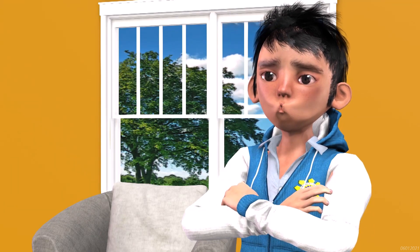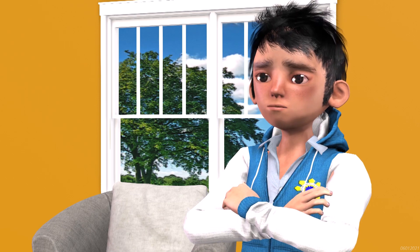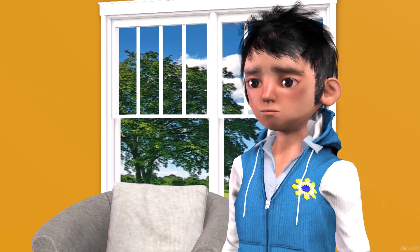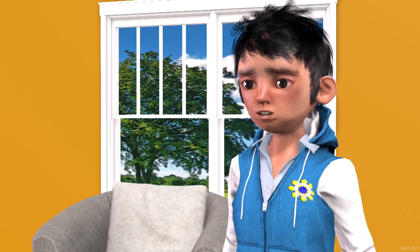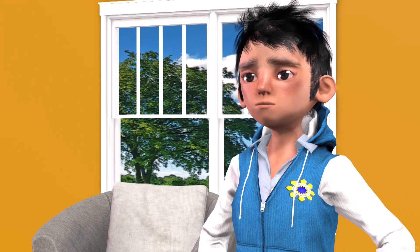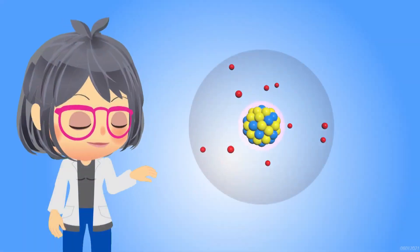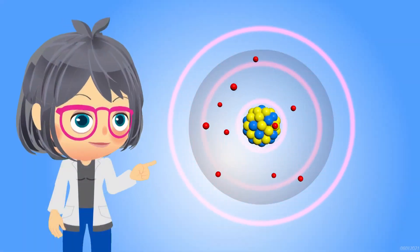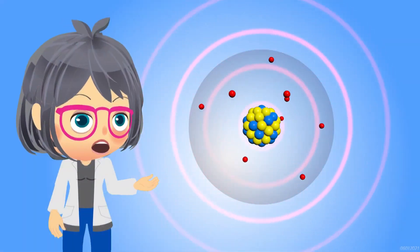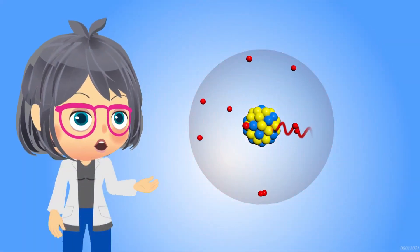So that's where radiation comes from — from the atom itself. Is there only one kind of radiation? Radiation can be in the form of electromagnetic waves or particles.